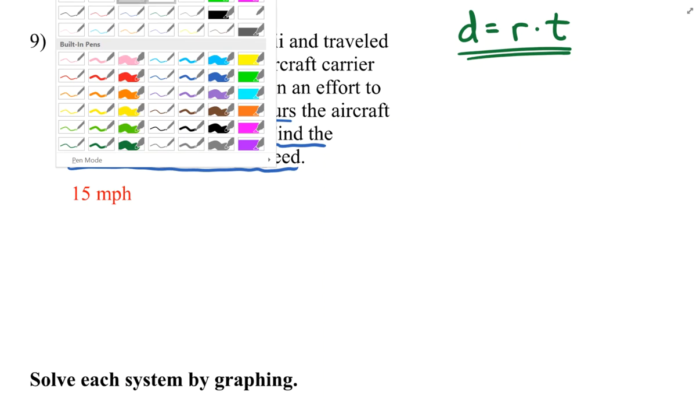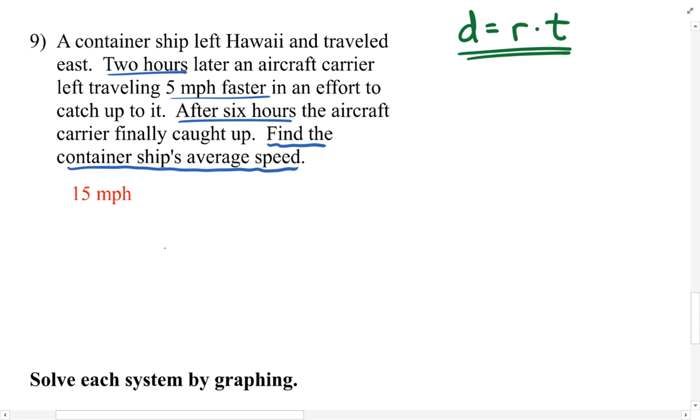I call upon this because we can use the information that was provided in a modified form of this equation to help represent this scenario. Before I actually get into the equation, I want to show something that may help. We've got this aircraft carrier that traveled for six hours, so I'm just going to draw six little arrows, trying to make them the same length, because that length of the arrow is representing the speed at which the aircraft carrier is moving.